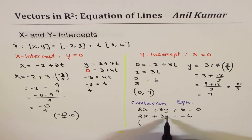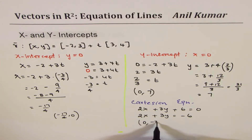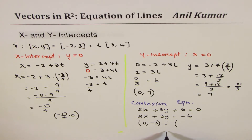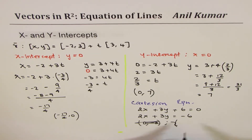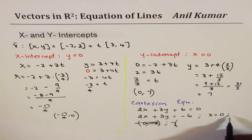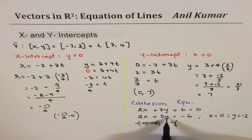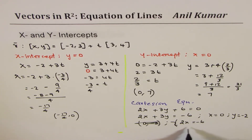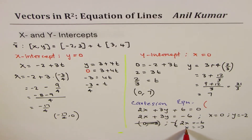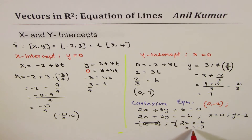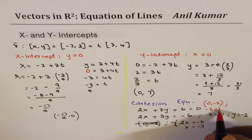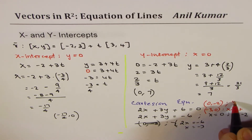The x-intercept will be found by equating y to 0: that gives minus 6 divided by 2, which is minus 3. For the y-intercept, we set x equals to 0 and get y equals to minus 6 divided by 3, which is minus 2. So the y-intercept is (0, -2) and the x-intercept is (-3, 0).